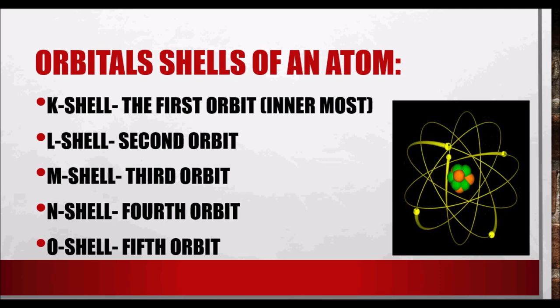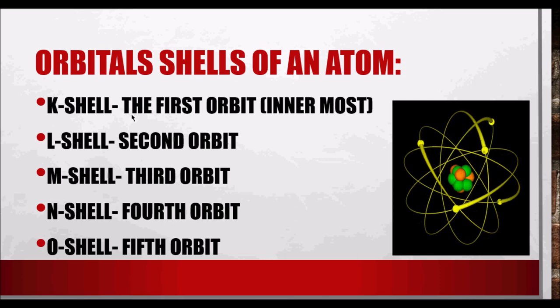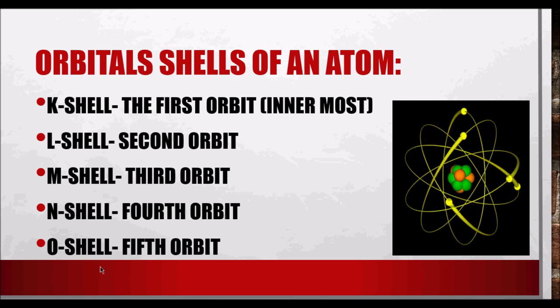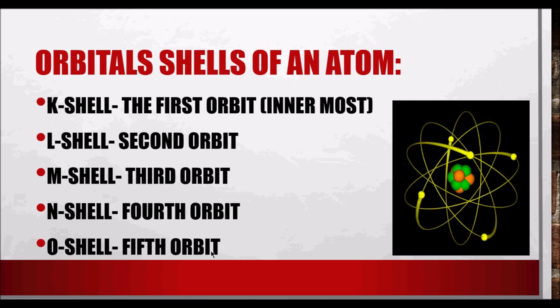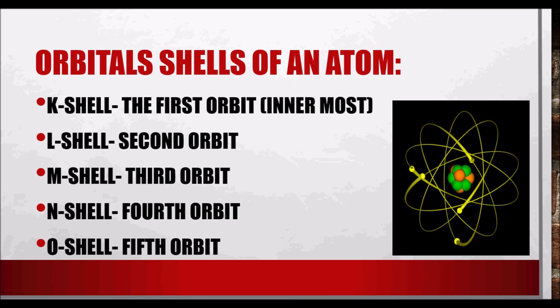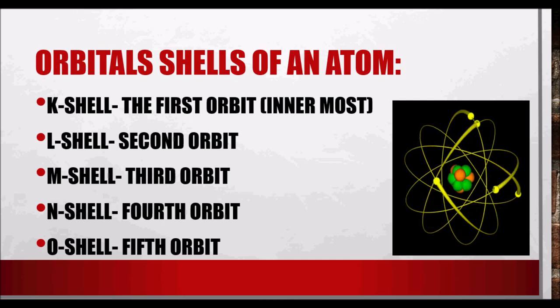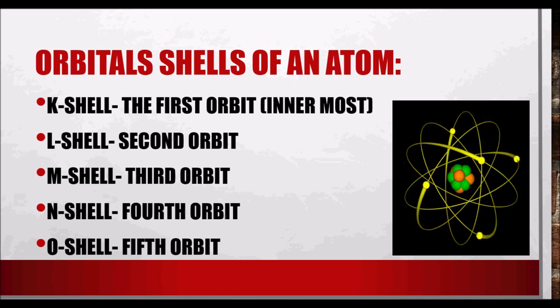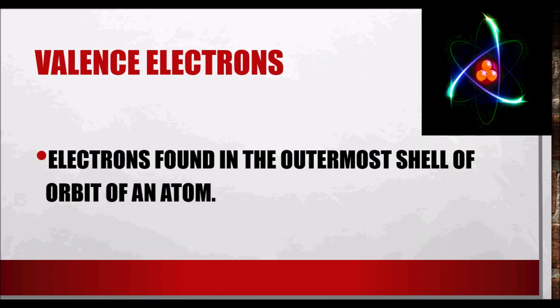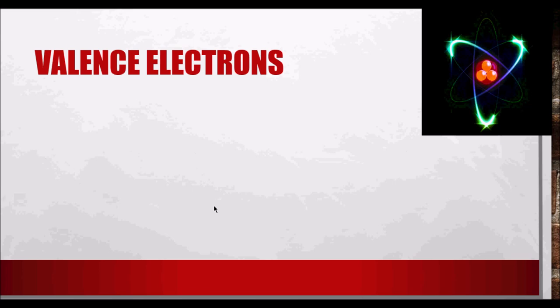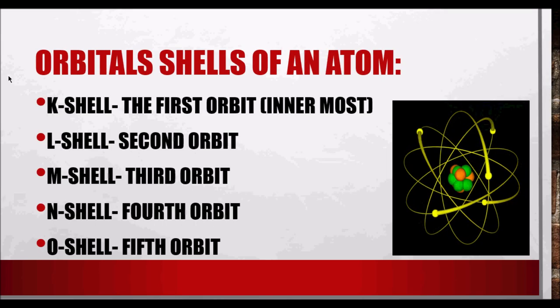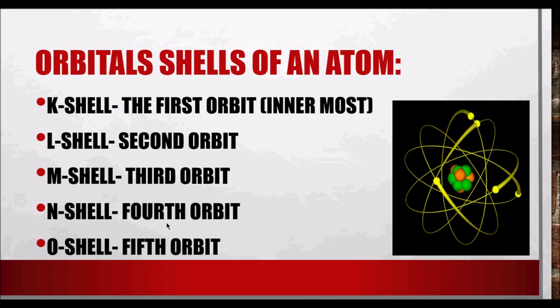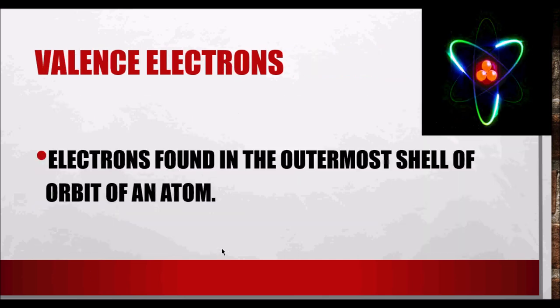We need to know the orbitals of an atom because in the first shell, or the outermost shell, that's where the valence electrons are located. These valence electrons are the reason why we have electricity.